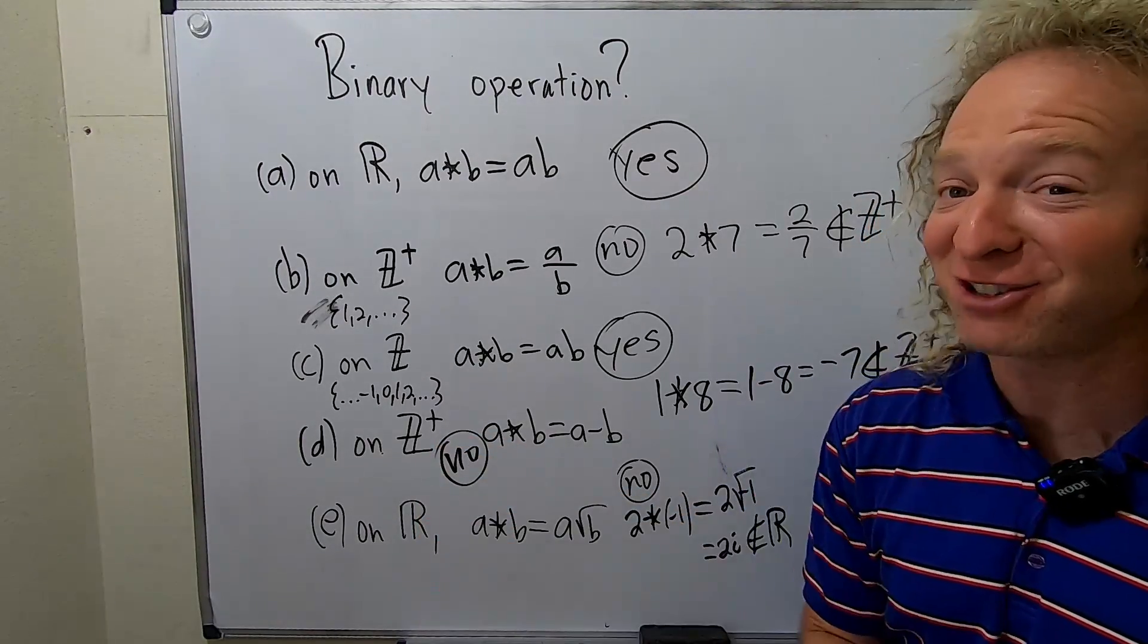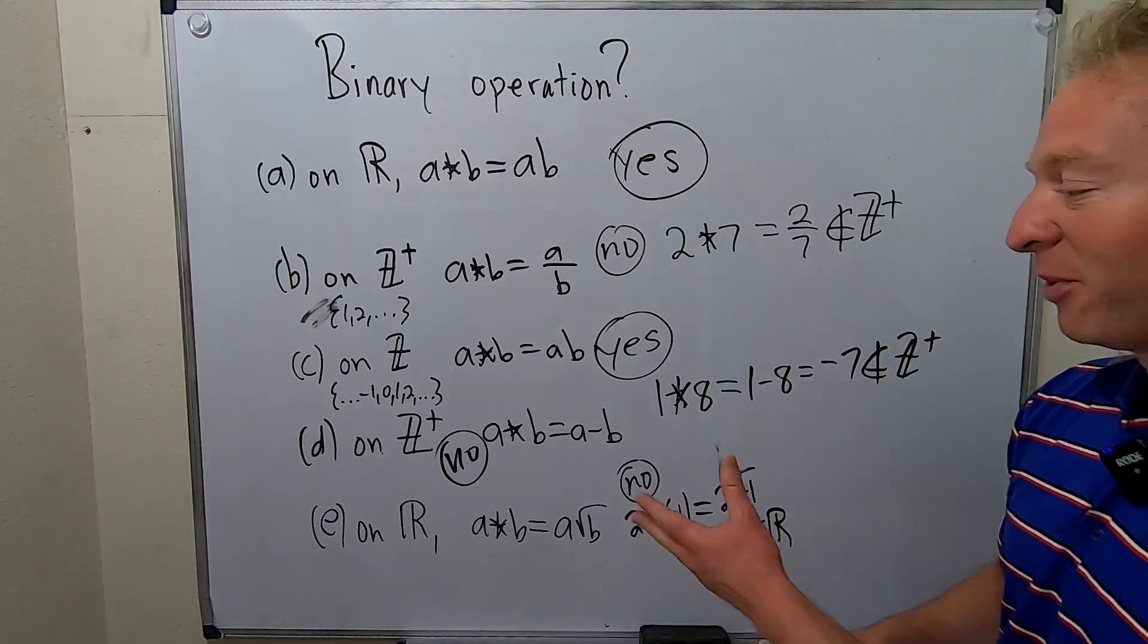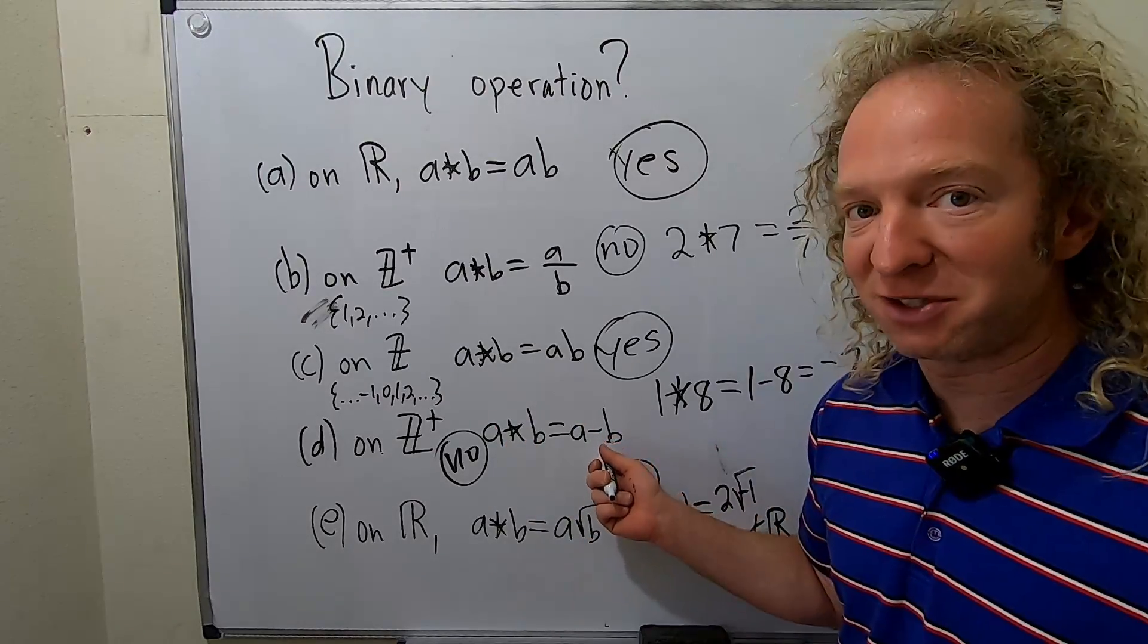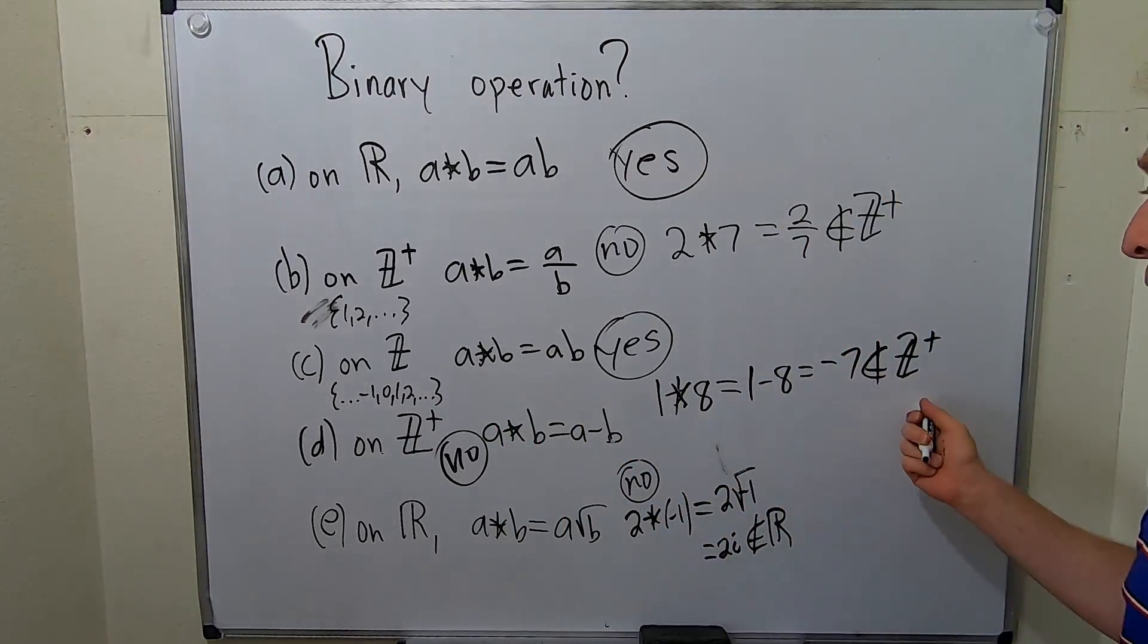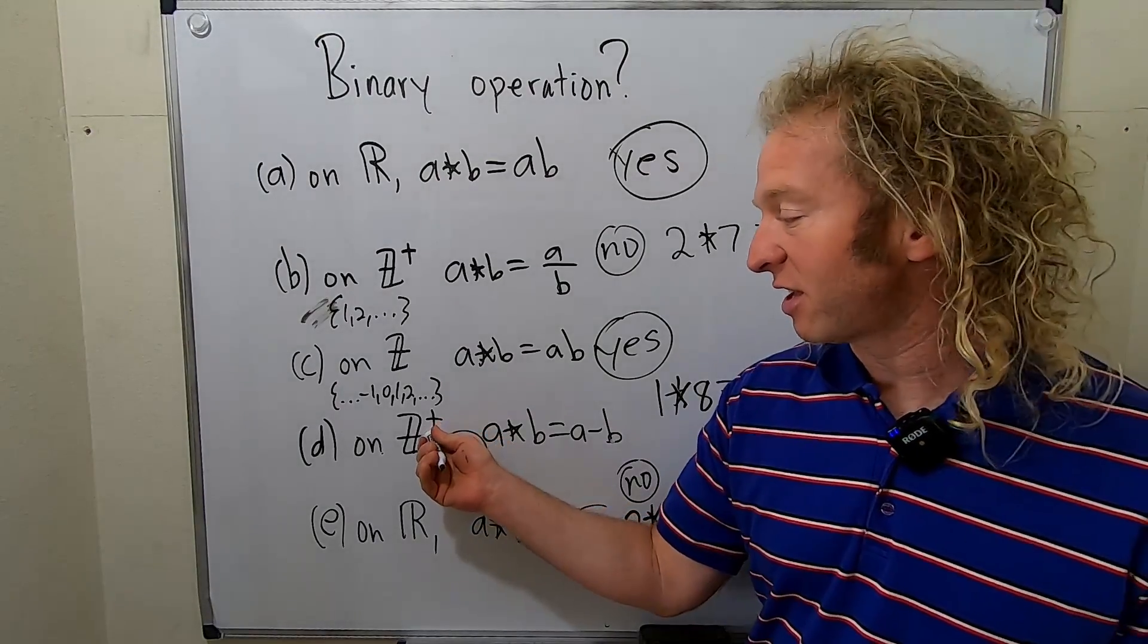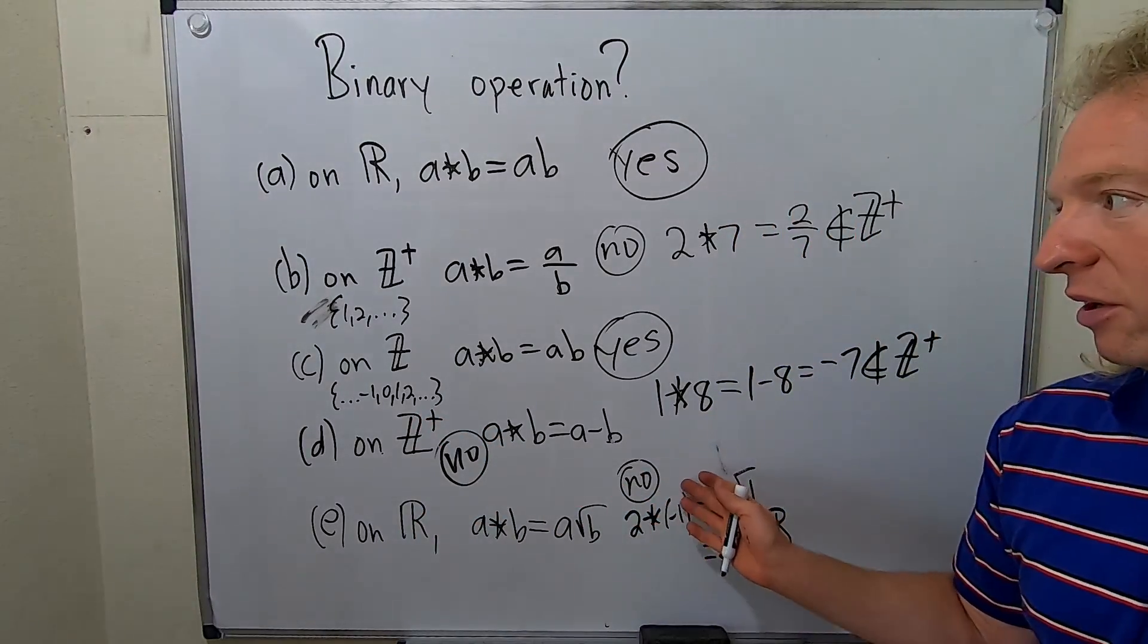So this would be no. It's a definite no. I like this problem. It's a little bit sneakier. You have to think. So if you take any two positive integers and you subtract them, do you get a positive integer? No. So we found one example where it fails. If you change this to the set of all integers, if I erase the little plus, then we're good.